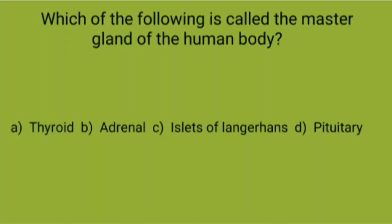Which of the following is called the master gland of the human body? A: Thyroid, B: Adrenal, C: Islets of Langerhans, D: Pituitary. Correct option is D, pituitary gland.